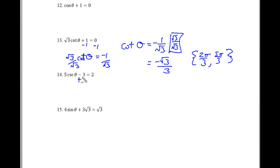Problem number 14, we're going to add 3 to both sides. So we have 5 cosecant theta is equal to 5. Divide both sides by 5, and we have cosecant of theta is equal to 1. To find theta, we'll go theta is equal to the inverse of cosecant of 1, but you can also look at the unit circle and see that that is at the spot of pi over 2.